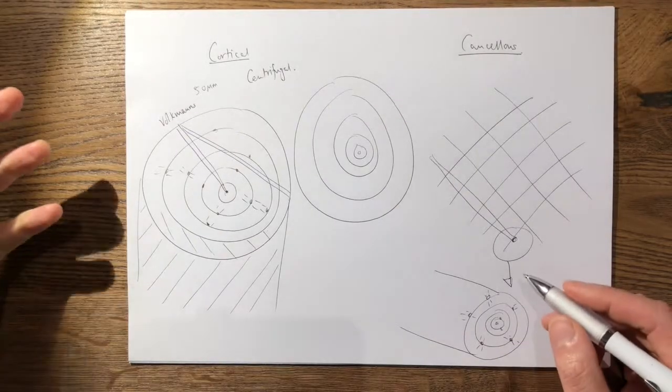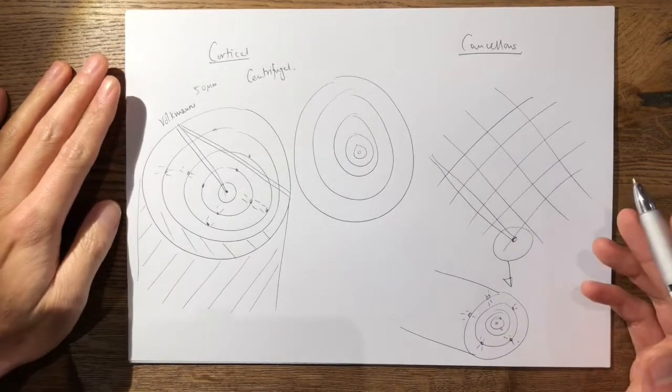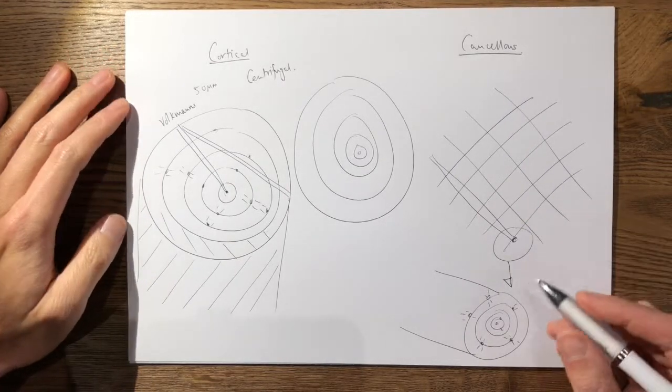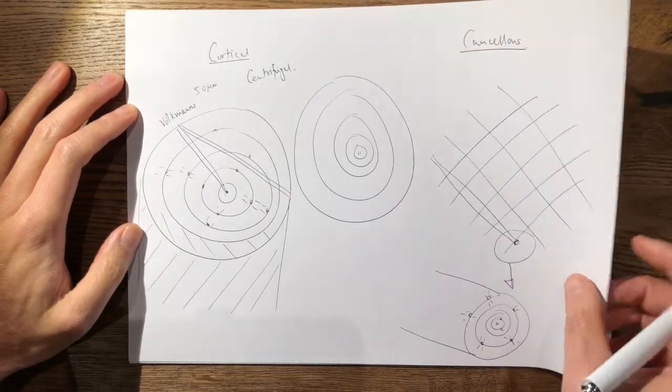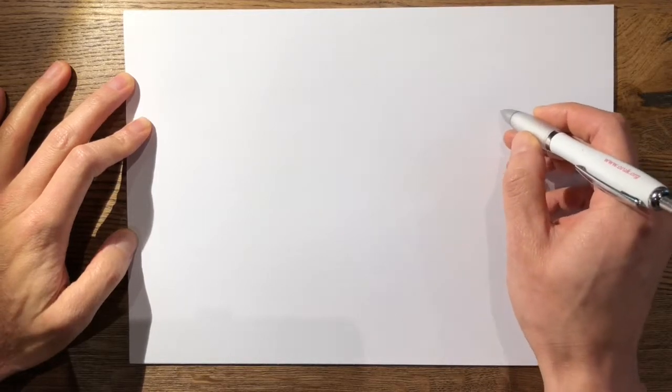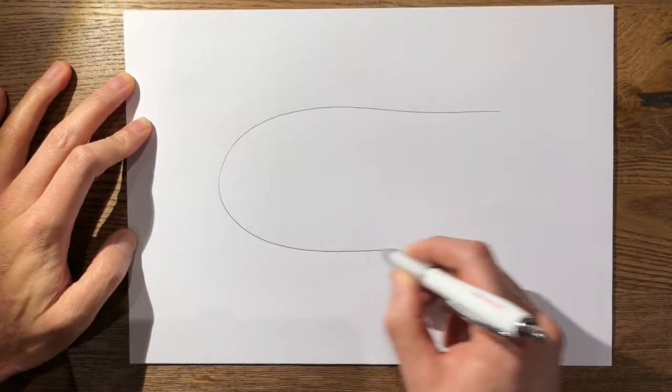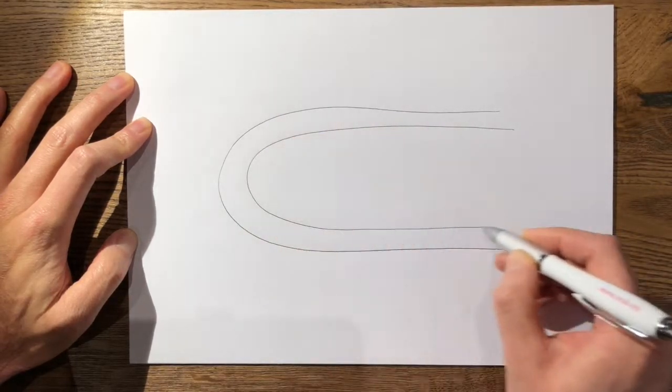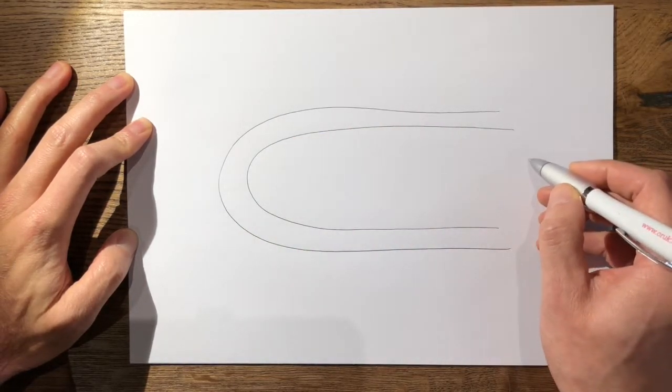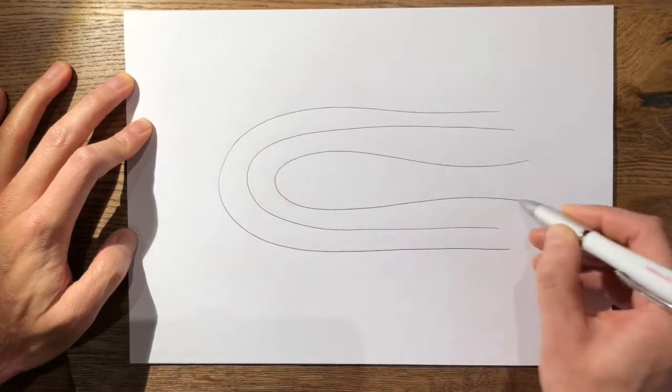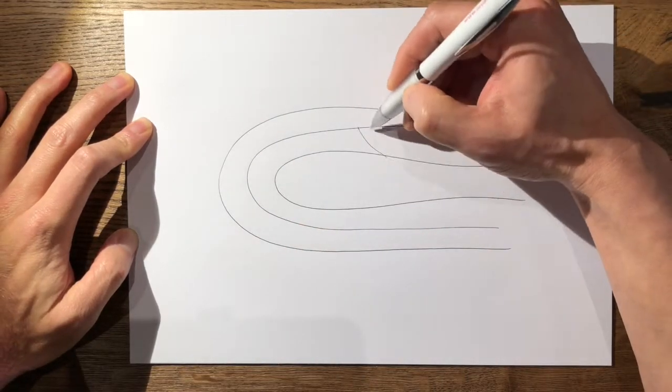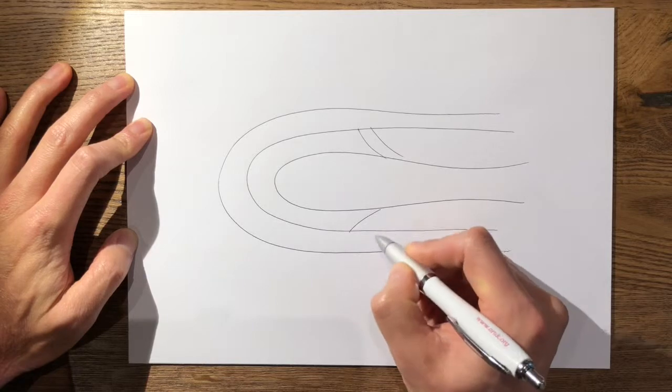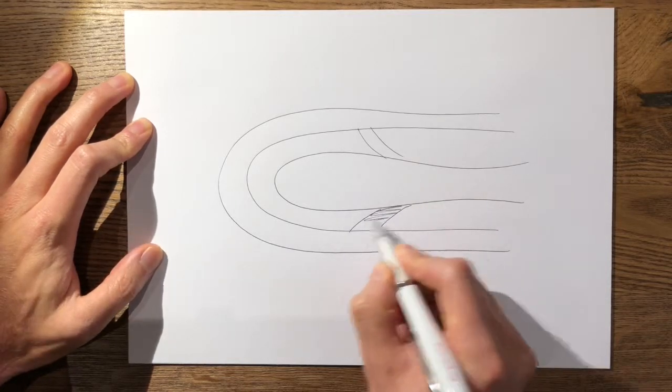The next question may follow: how does bone remodel or heal? This is where you lead on to draw a cutting cone. First you draw something like this, then another line within it, and a further line within that, and here you draw two dark areas.